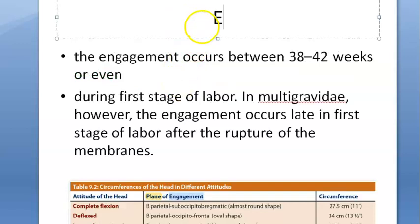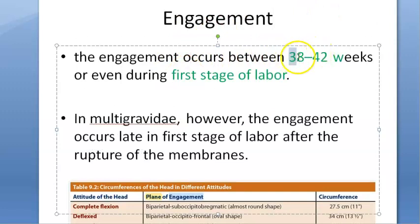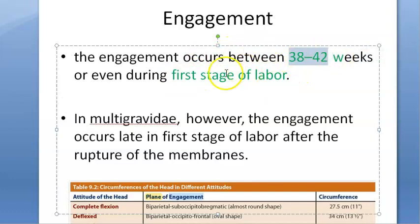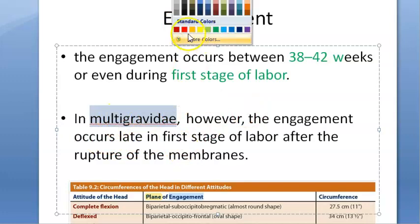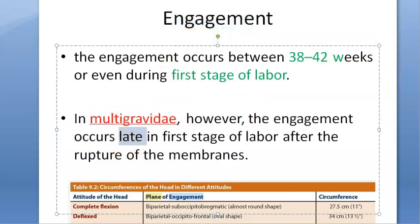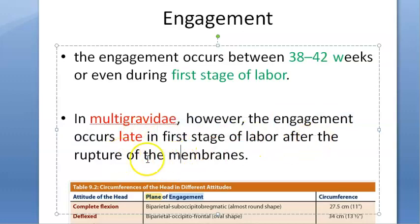When does engagement occur? It occurs between 32 to 42 weeks, or even during the first stage of labor — from the onset of labor to full cervical dilatation. It can also occur before the onset of labor, around 38 to 42 weeks. In a multigravida, however, engagement occurs late — in the first stage of labor or after rupture of membranes.